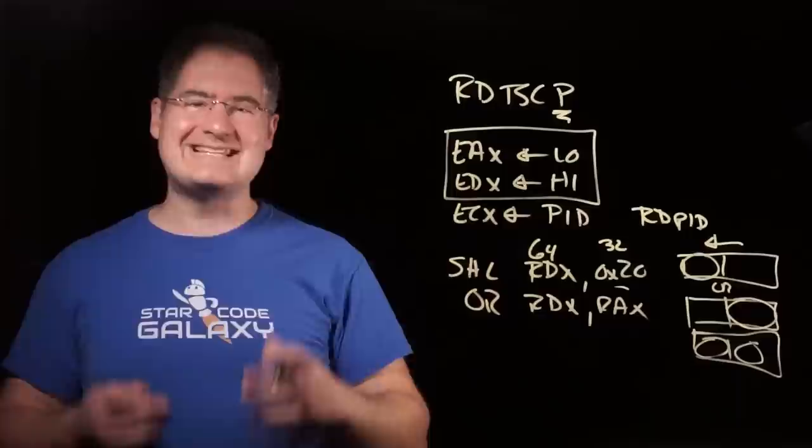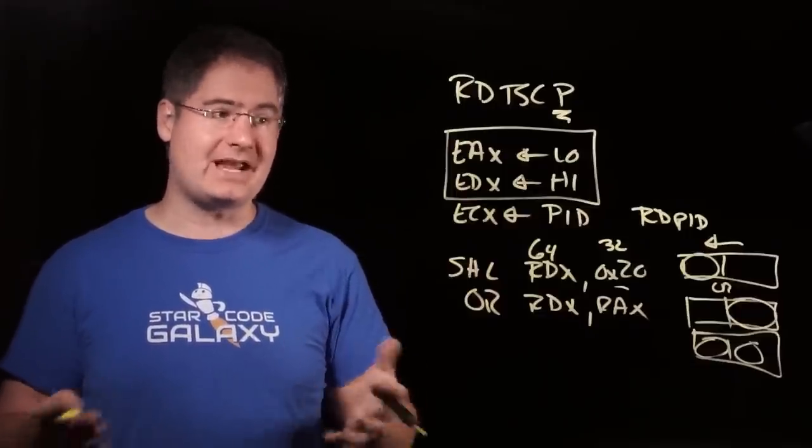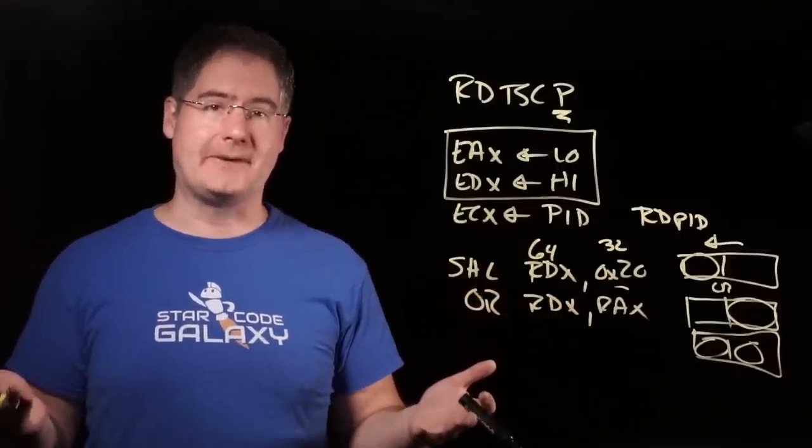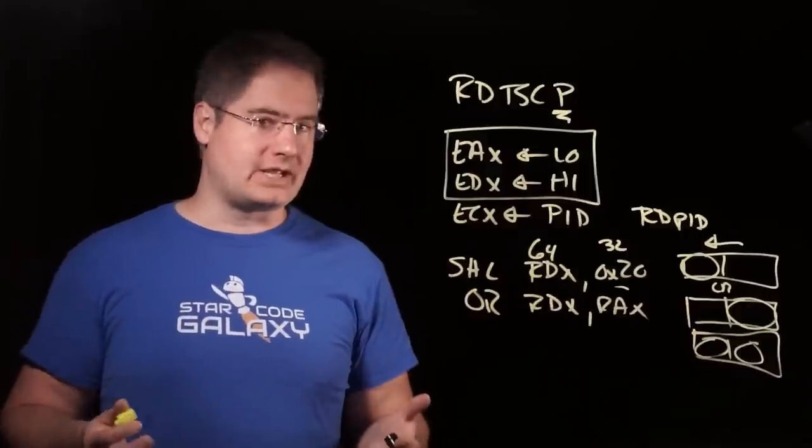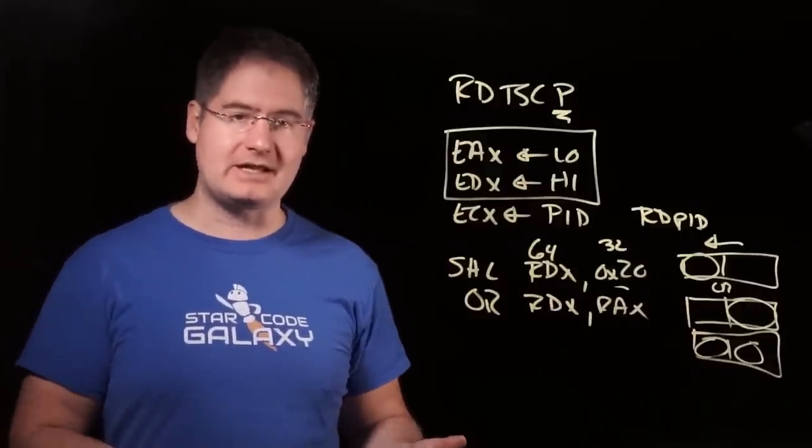So we can see exactly where query performance counter is getting its time source from. It's just the timestamp counter. So when people are wondering, should I call query performance counter or should I call RDTSC? Well,